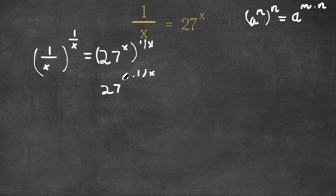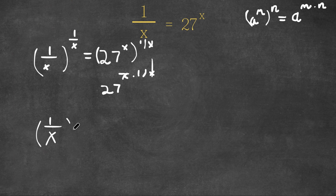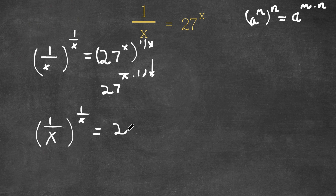For x times 1 over x, these x's simply cancel out and we are left with 1. So this would be 1 over x to the power of 1 over x is equal to 27 to the power of 1.